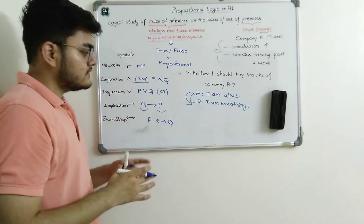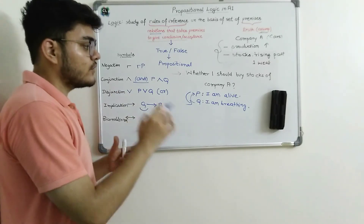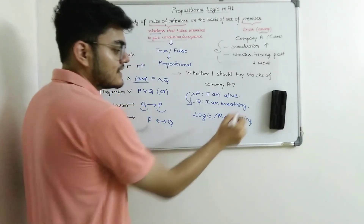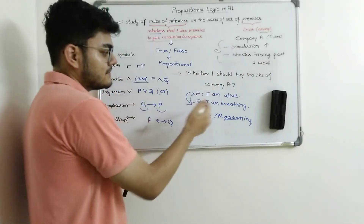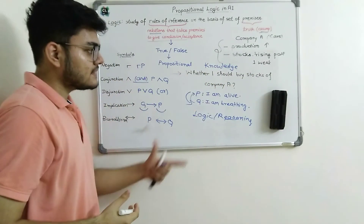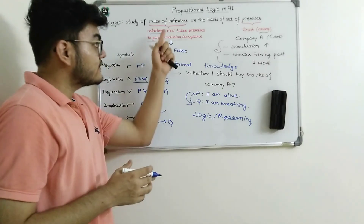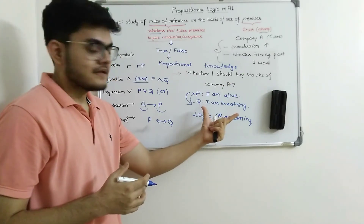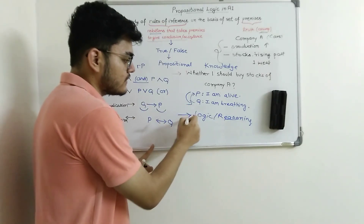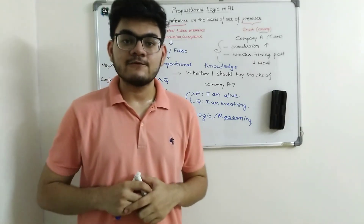So these are the five important symbols used in propositional logic to derive logic. Our core objective is to derive logic because we want to build a reasoning system in AI. We will use knowledge — all of these statements P, Q, etc. — apply operators and rules, and that will give us the logic or the reasoning. In the next tutorial, we will study some of the properties of these operators and rules. That's all for this tutorial. Thanks for watching.